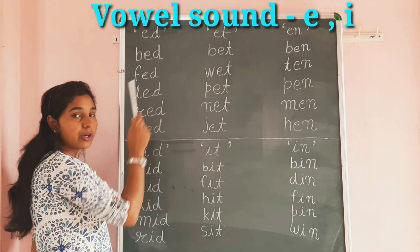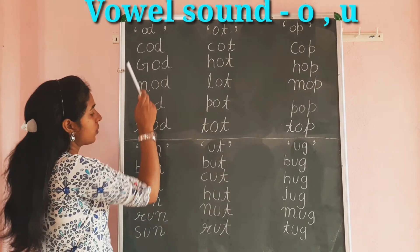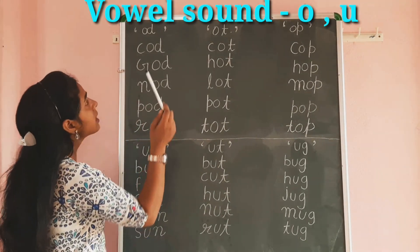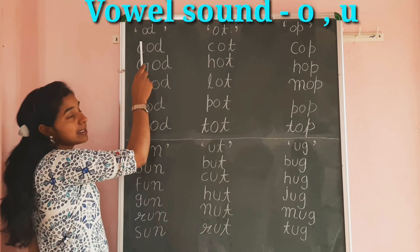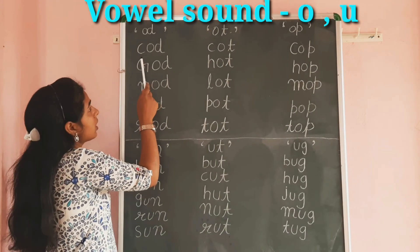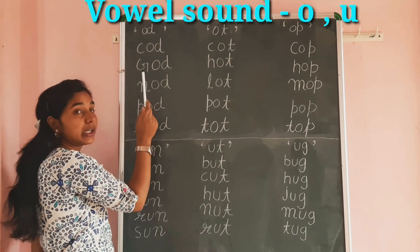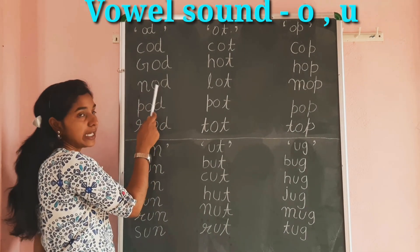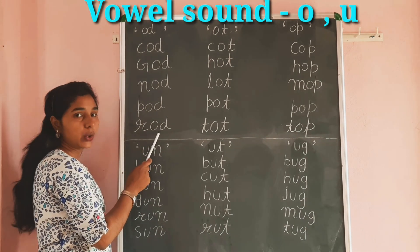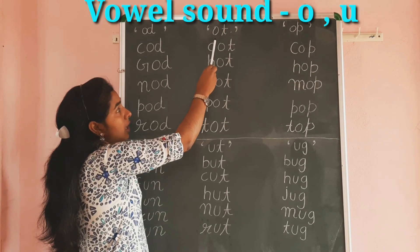Next we will learn the sound of O and U. This is O-D: C-O-D, Cod. G-O-D, God. N-O-D, Nod. P-O-D, Pod. R-O-D, Rod.